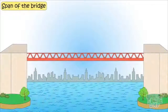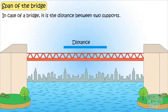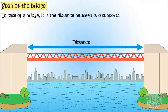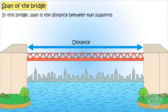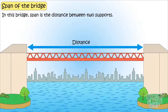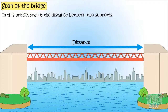Span of the bridge. In the case of a bridge, it is the distance between two supports. Like here, in this bridge, the span is the distance between two supports. It is a single-span bridge — that is, there is a single continuous slab with two supports at each end.